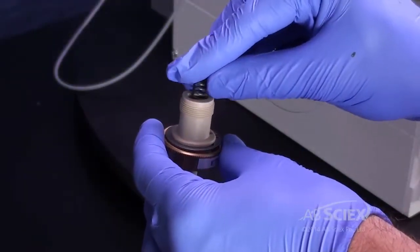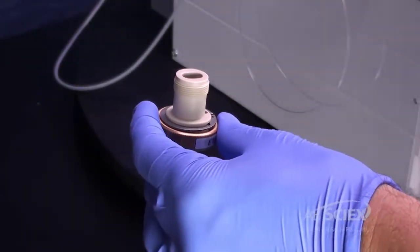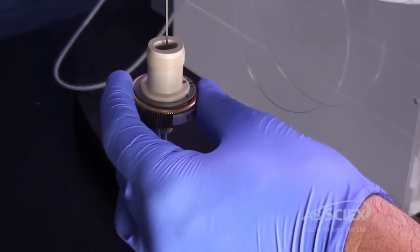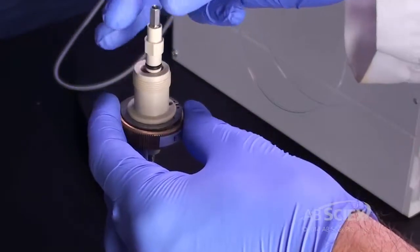To reinstall the new electrode, hold the probe downwards and ensure the internal spring is in place. Slide in the electrode and refit the black electrode adjustment cap.